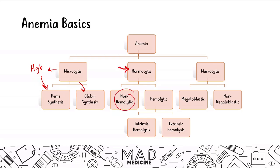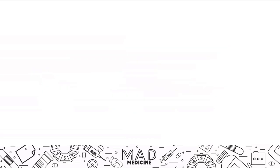We have covered all of those things — non-hemolytic and hemolytic anemias. Now we're going to be talking about macrocytic anemias, and these can be subdivided based off of whether or not they're megaloblastic or non-megaloblastic anemias.